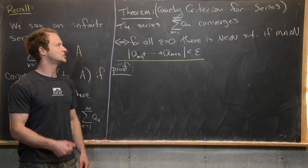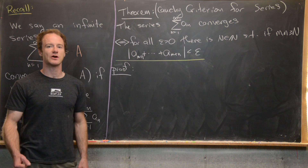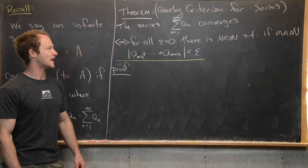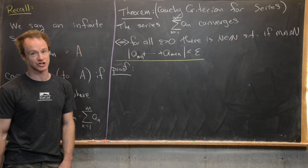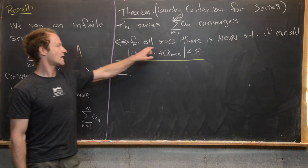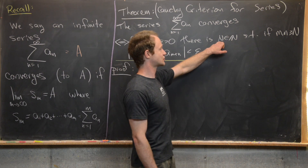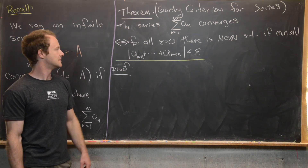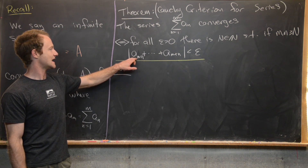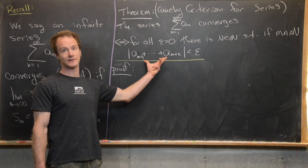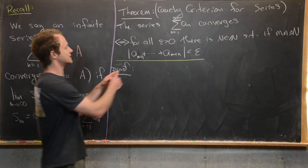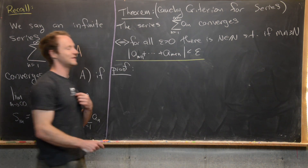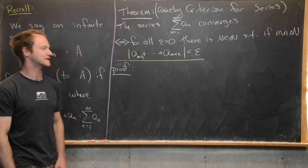Now we're going to prove something called the Cauchy criterion for series. We'll prove that the series a sub n converges if and only if for all epsilon greater than zero there is a natural number capital N such that if little m and little n are both greater than or equal to capital N, then the absolute value of the sum of terms a sub (m+1) up to a sub (m+n) is less than epsilon. Notice we have n terms being added together, starting at the (m+1)-th term.